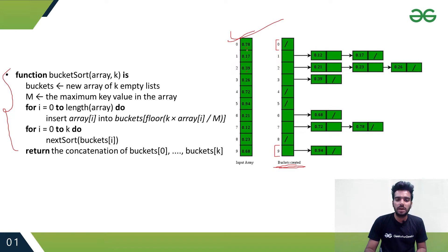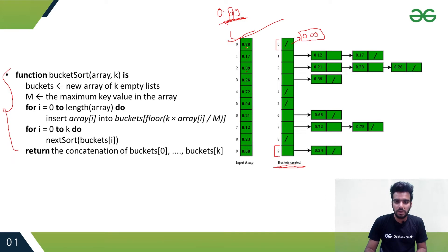We look at the decimal part of each value. For example, if there is a value 0.09, we store it at bucket zero. If there is a value 0.78, we store it at bucket number seven.